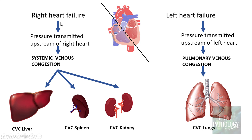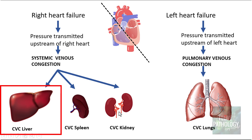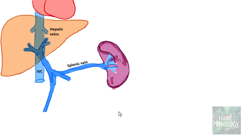Similarly, whenever you have right heart failure, that pressure is transmitted upstream of the right heart, which leads to systemic venous congestion leading on to chronic venous congestion of the liver, spleen and kidney. So let's look into chronic venous congestion of liver now.